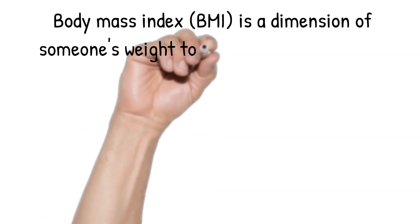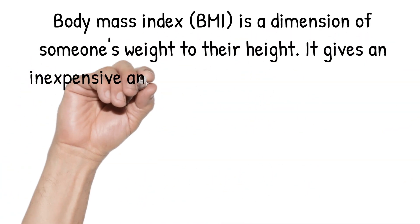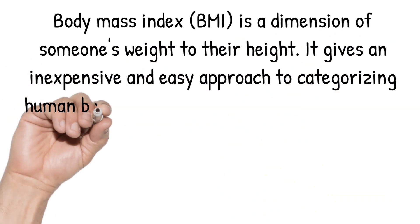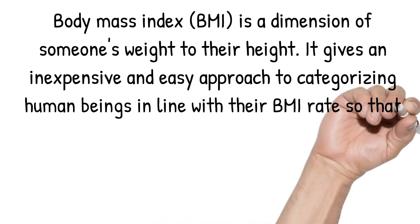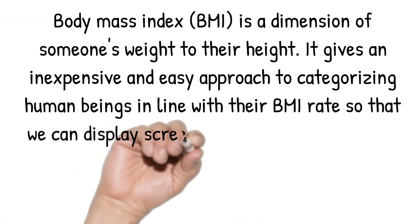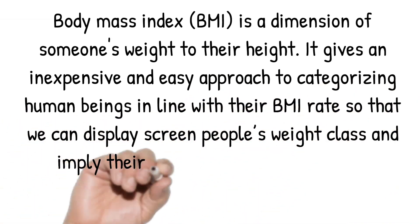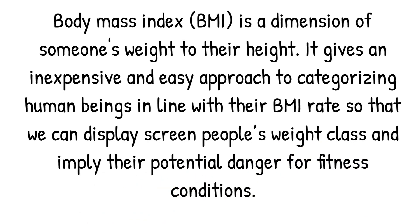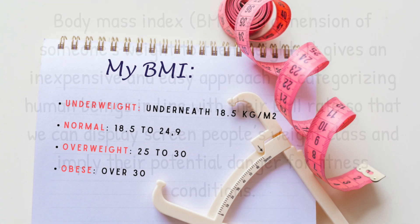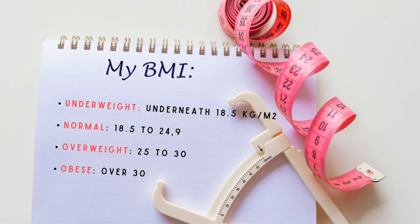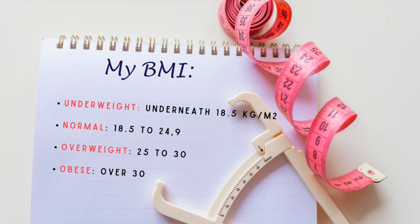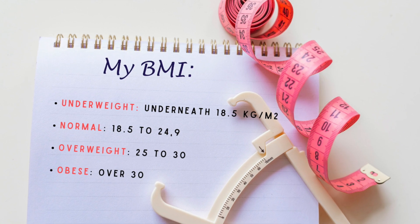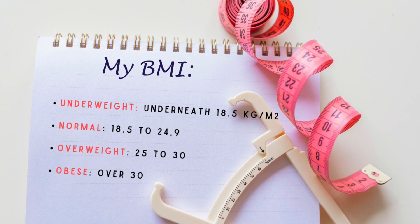Body mass index is a measure of someone's weight relative to their height. It gives an inexpensive and easy approach to categorizing people according to their BMI rate, so that we can screen people's weight class and indicate their potential risk for health conditions. BMI is a convenient rule of thumb used to broadly categorize a person as underweight, normal weight, overweight, or obese.